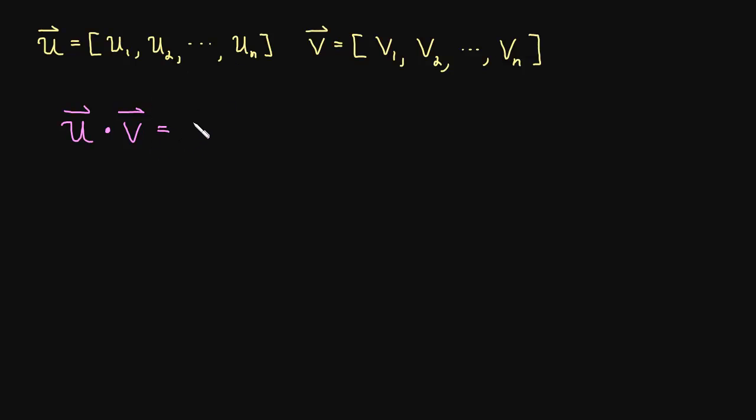The way that we do this is we do u1 times v1 plus u2 times v2 plus u3 times v3, so on and so on, all the way until we get to the end, un times vn.